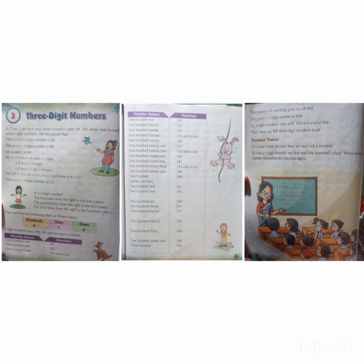196 is read as one hundred and ninety-six. Next, 357 is read as three hundred and fifty-seven. Next, 978 is written as nine hundred and seventy-eight. So students, like this we will continue our exercise and we will do it now. Thank you.